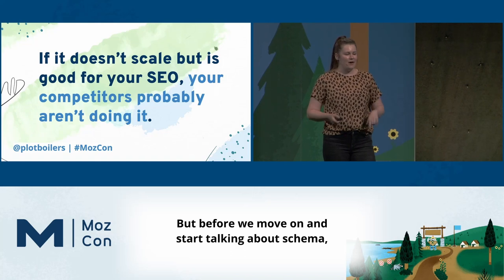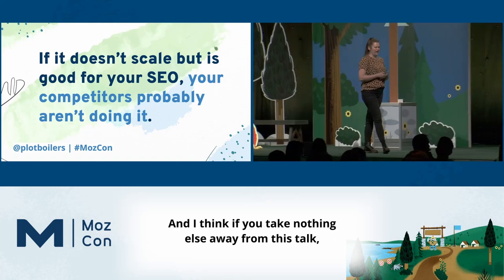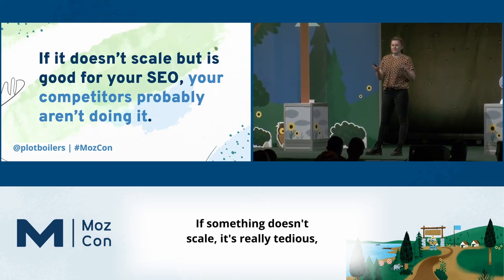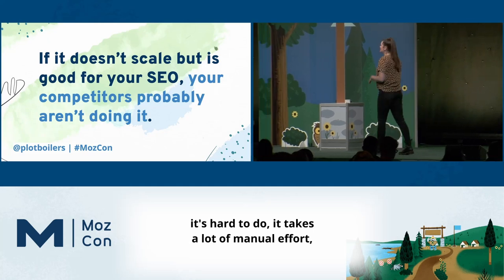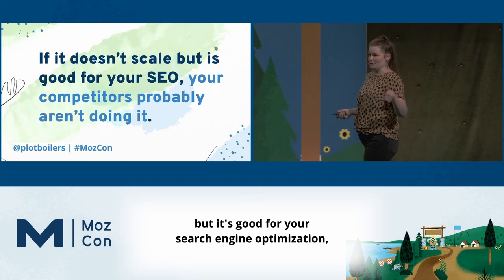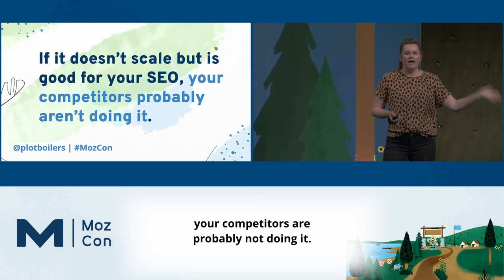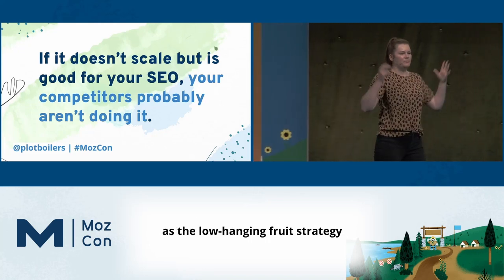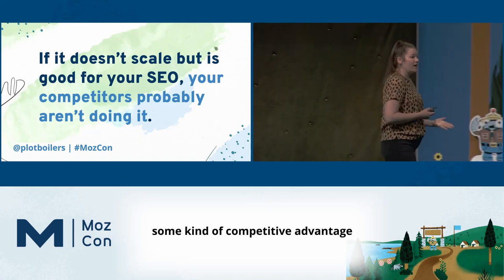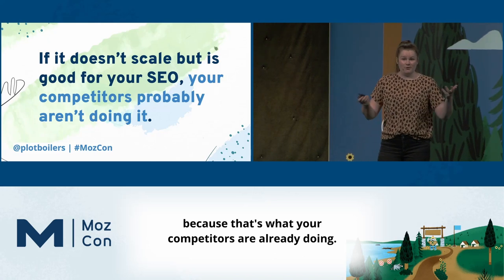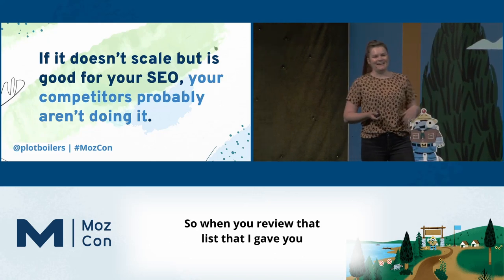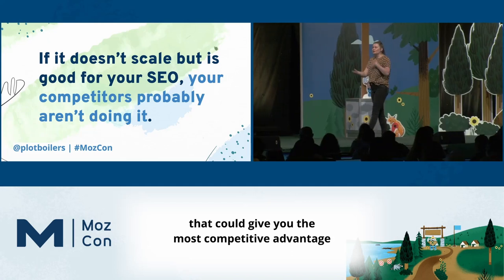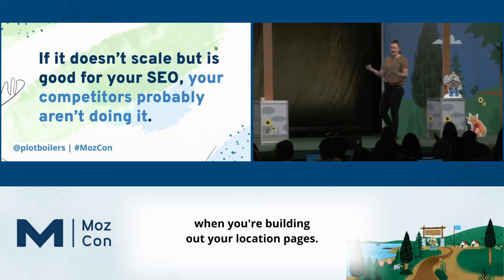Before we move on to schema, I want to highlight something. If you take nothing else away from this talk, remember this: if something doesn't scale, it's really tedious, it's hard to do, it takes a lot of manual effort — but it's good for your SEO — your competitors are probably not doing it. If something is hard to do and not scalable, it's probably going to give you some competitive advantage. So when you review that list of ingredients, do not gloss over the ones that are going to be the most work, because those are the ones that could give you the most competitive advantage.